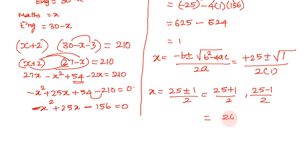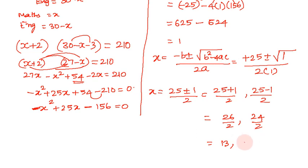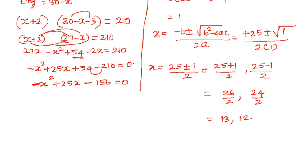So x equals 25 plus 1 over 2 equals 26 over 2 equals 13, or x equals 25 minus 1 over 2 equals 24 over 2 equals 12. So there are 2 values for x.